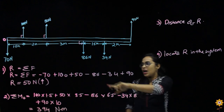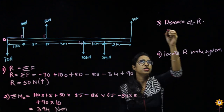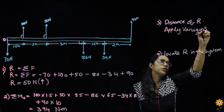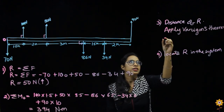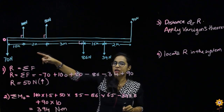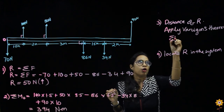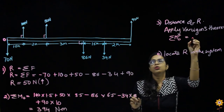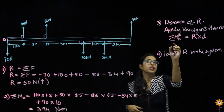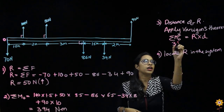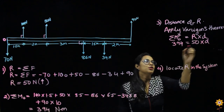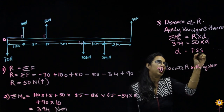Our next step is to find the distance where R would be located. For finding the distance, we apply Varignon's theorem: the moment of all forces about the point equals the moment of the resultant force about the same point. So moment about O equals R into D. We have 394 equals 50 into D. Calculating D from here, we get 7.88 meters.